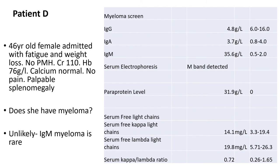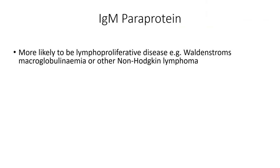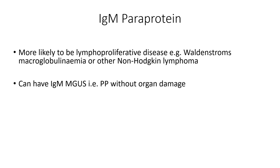IgM myeloma is really rare, so think about what it might more likely be. It's much more likely to represent a lymphoproliferative disorder. The most commonly found one is Waldenstrom's macroglobulinemia, or various other non-Hodgkin lymphomas can have IgM paraproteins. You can also have an IgM MGUS — a paraprotein without any organ damage. Does that apply to our lady? Well, she's quite anaemic and she's got a big spleen, so things may have progressed beyond a level where we're just happy to monitor.